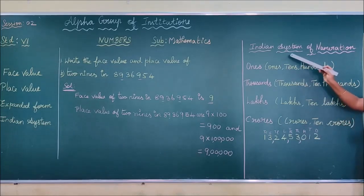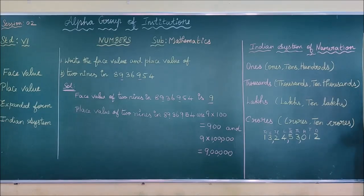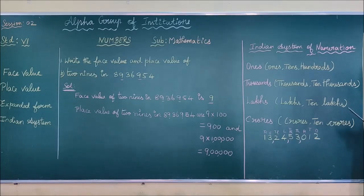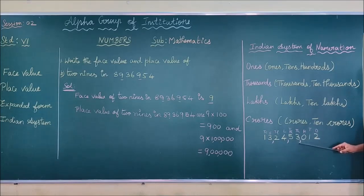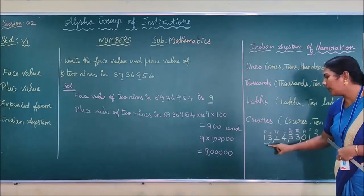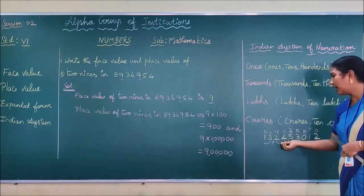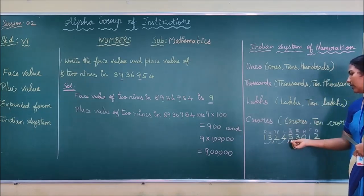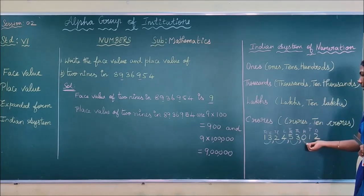Before that, in the Indian system of numeration, you must know how to use commas. We have already seen this in the previous class. Starting from the right, the first comma is placed after the first three digits — one, two, three. Then after every two digits we are placing the next commas. Why do you place this comma? You have to call this a period. This is the period of crores, this is the period of lakhs, this is the period of thousands, and this is the period of ones.